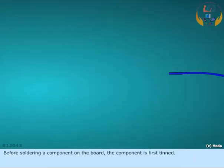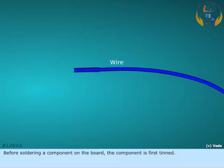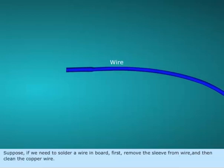Before soldering a component on the board, the component is first tinned. Suppose if we need to solder a wire in board, first remove the sleeve from wire and then clean the copper wire.